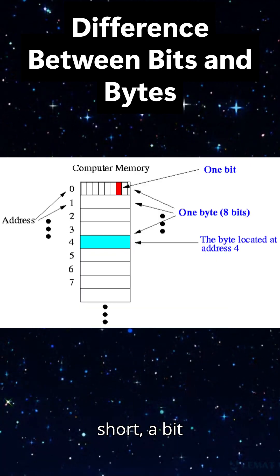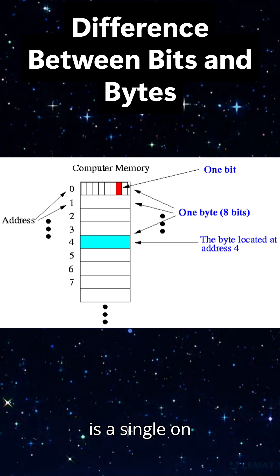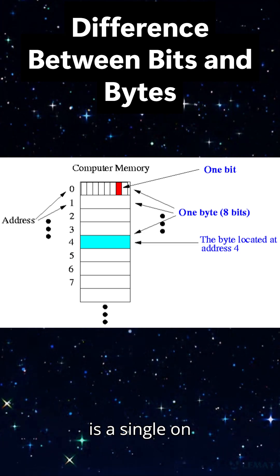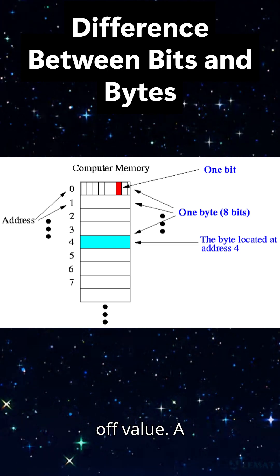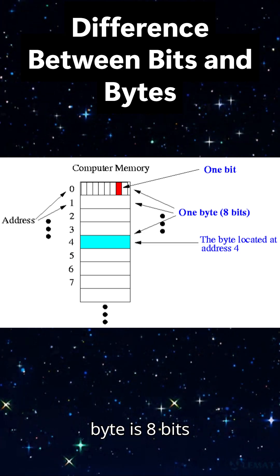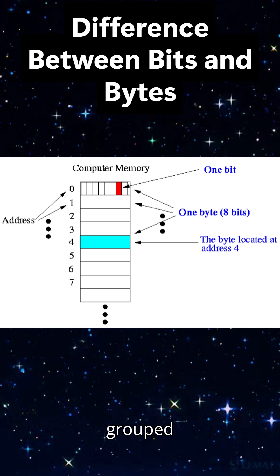In short: a bit is a single on-off value. A byte is 8 bits grouped together, used as the standard unit to measure and represent meaningful data.